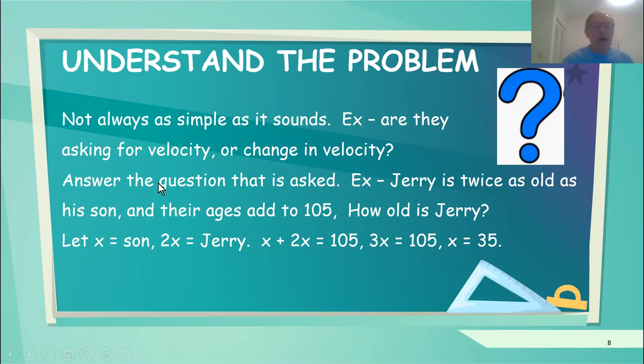Here's something everyone has messed up, including me, one time or another. Answer the question that is asked. For example, Jerry is twice as old as his son and their ages add to 105. How old is Jerry? That's an algebra problem. Let x equals the son's age, 2x equals Jerry's age, x plus 2x equals 105, 3x is 105, x equals 35. But are we done? No, we're not done. X is the son's age. What they asked is, how old is Jerry? You need the answer of 2x. 70 is the answer to the problem that was asked.